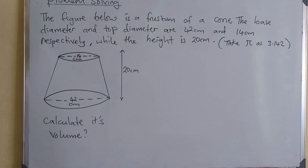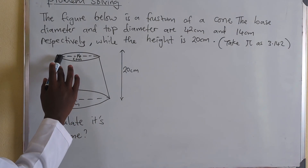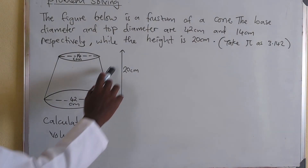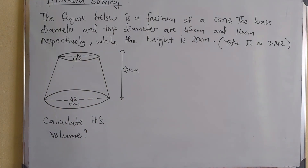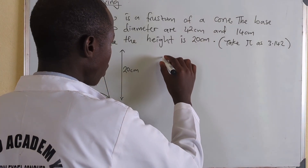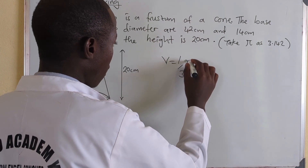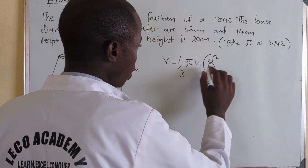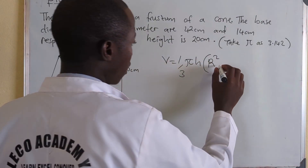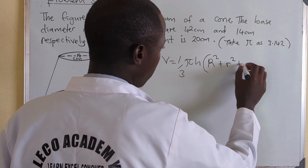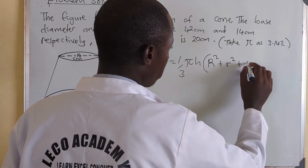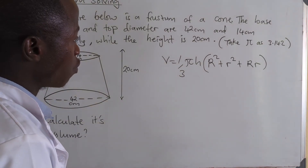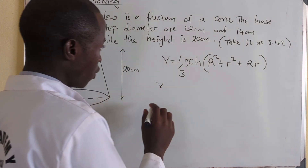Now to calculate its volume — the top diameter is 14, the base diameter is 42, and the height of the frustum is 20. The formula for finding the volume of a frustum is: Volume = (1/3) × π × height × (R² + r² + R×r), where R is the radius of the big base and r is the radius of the small base.